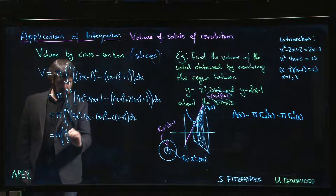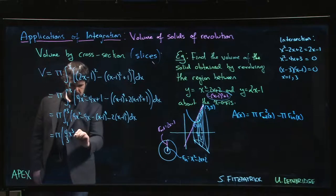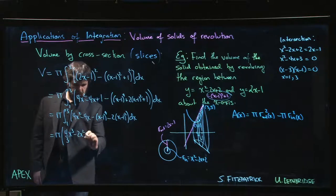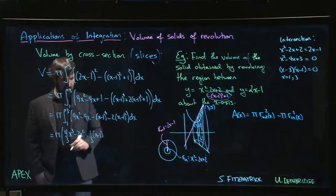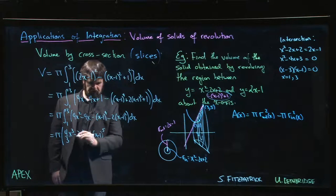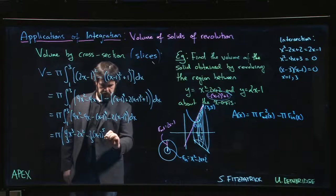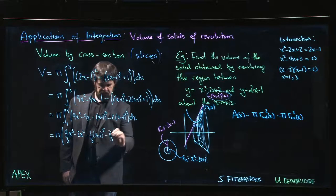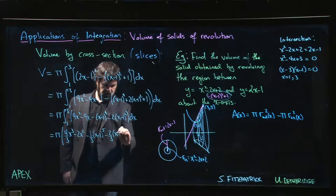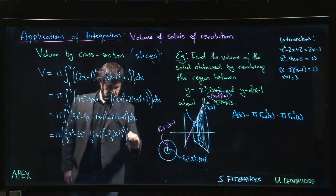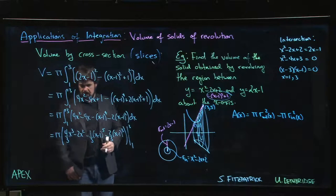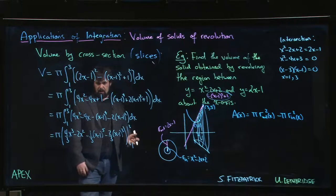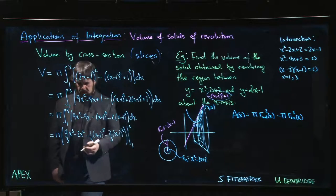Okay, so that's going to give me pi times 4/3 x³ minus 2x² minus 1/5 (x minus 1) to the fifth minus 2/3 (x minus 1)³. And we have to evaluate from 1 to 3. It takes a little bit of effort, right? Numbers are kind of big, but we can handle that.